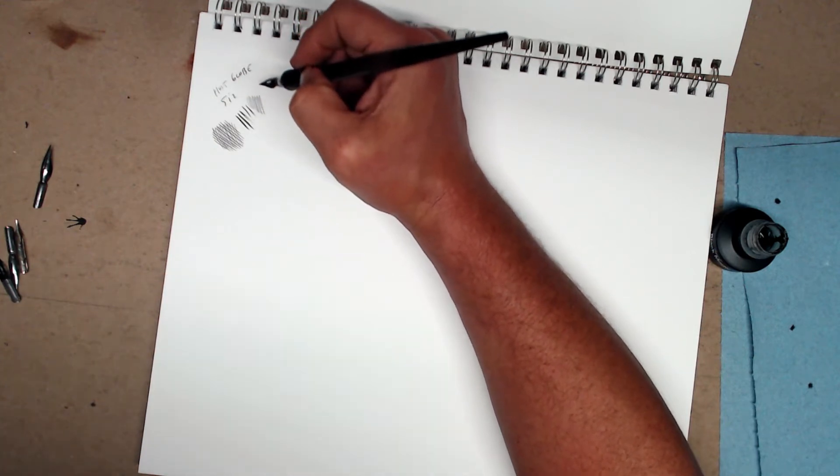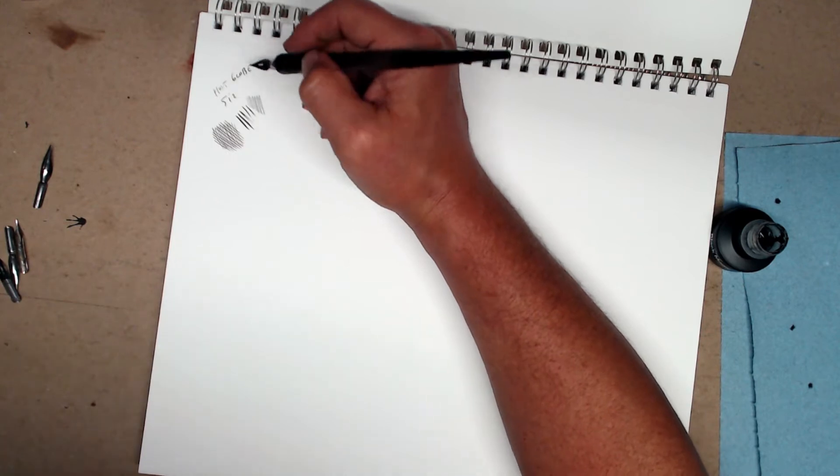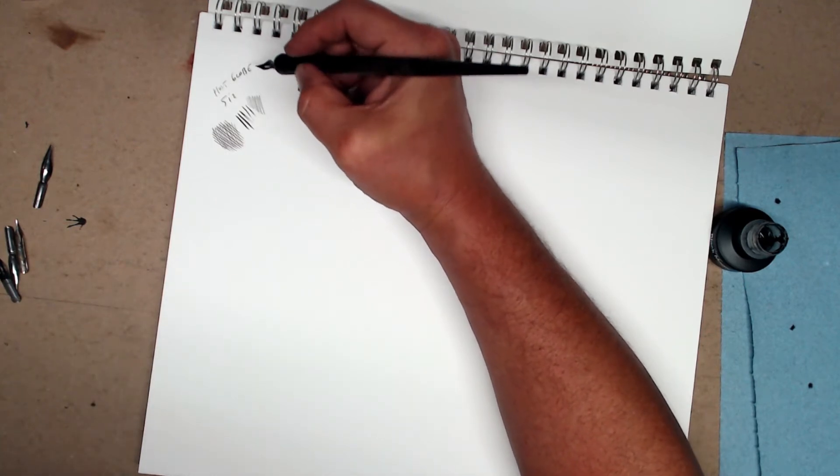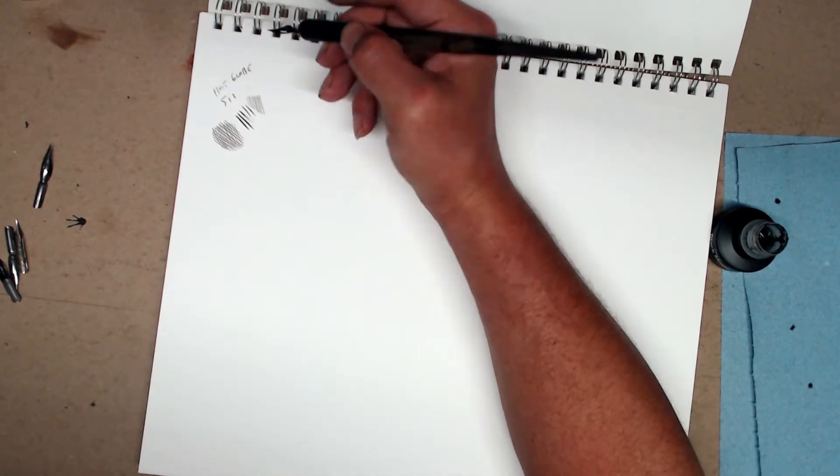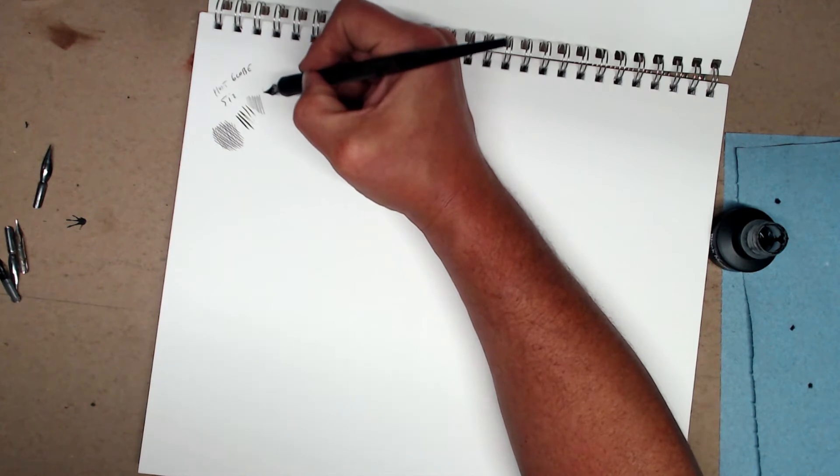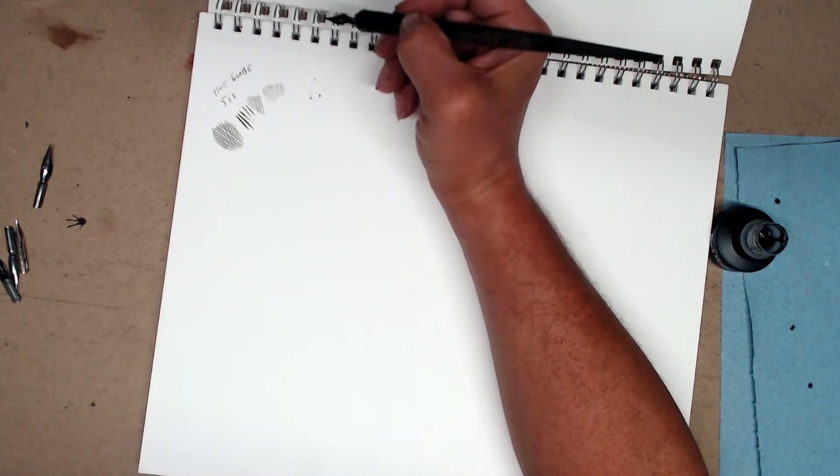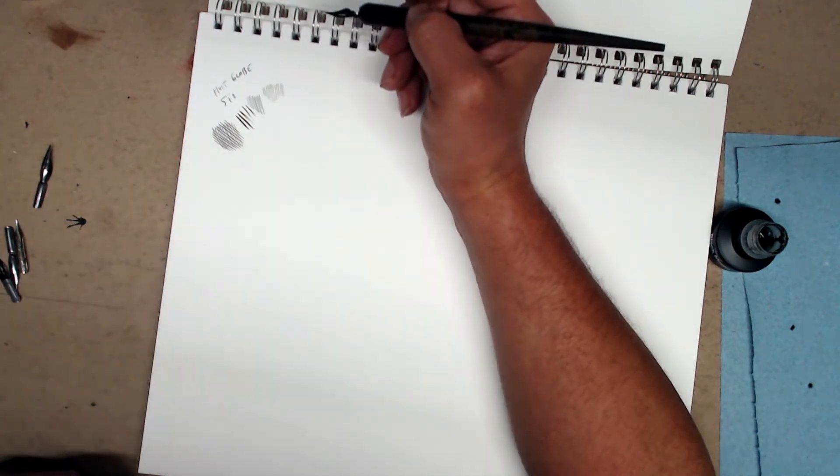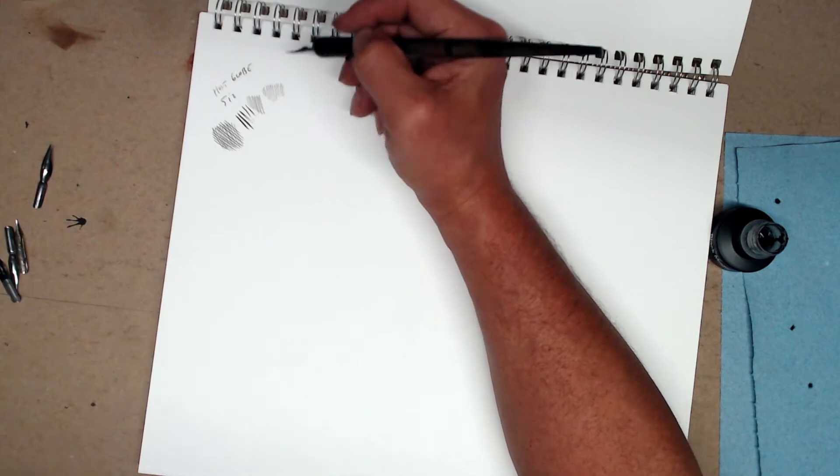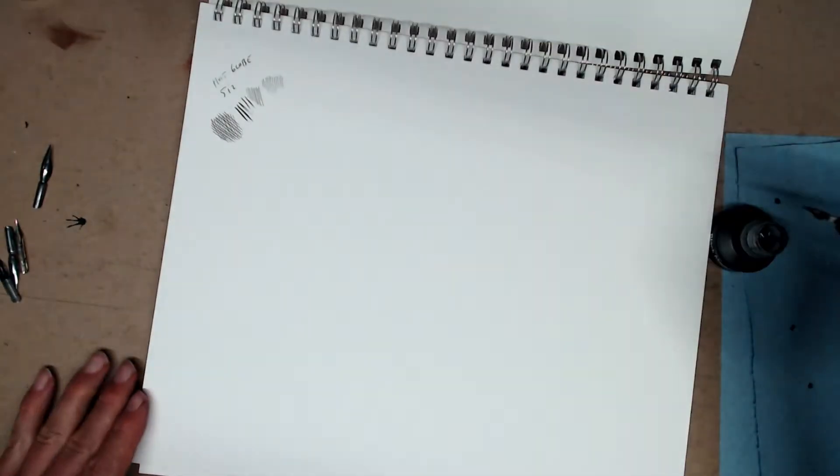And by the way, most pens will put down an even thinner line in reverse. So if I turn my nib upside down, you can see that it puts down an even extra fine line, which is really good for half tones. Got a bunch of ink buildup there. So this is, I would say, an extra fine line.